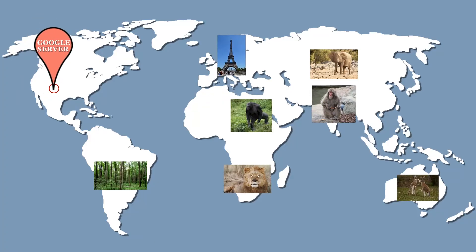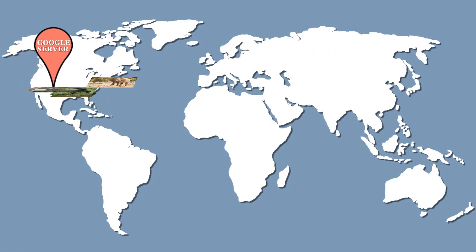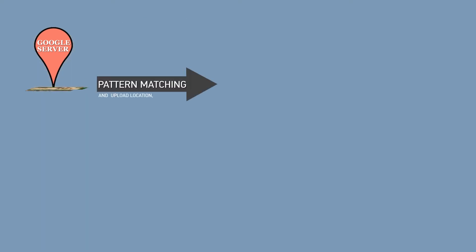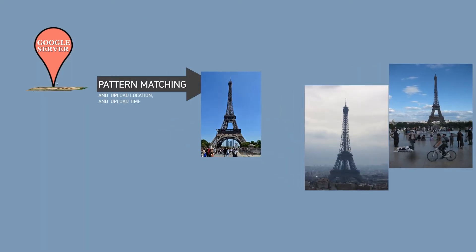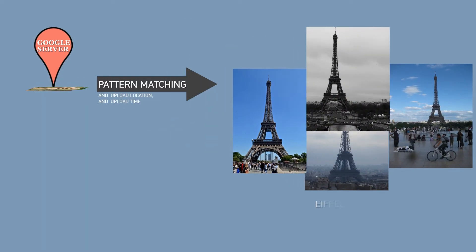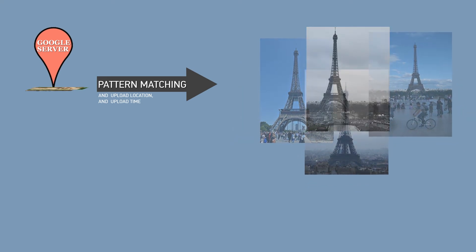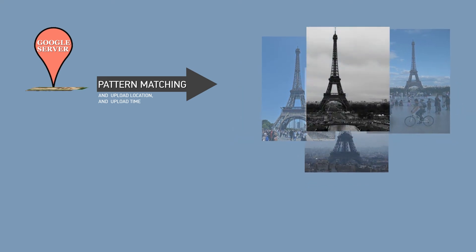Google receives thousands of images clicked by random users. Based on pattern matching, Google finds photographs of a particular location and then creates smooth transitions between those images.